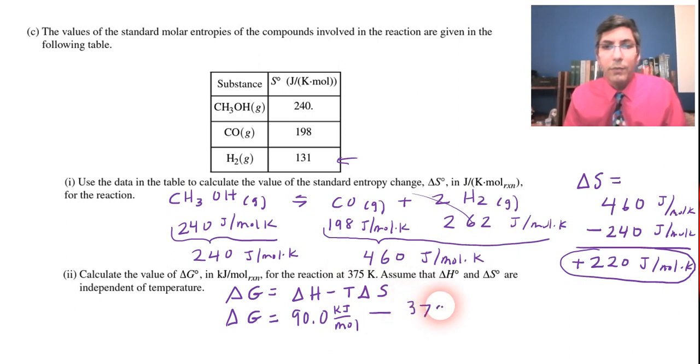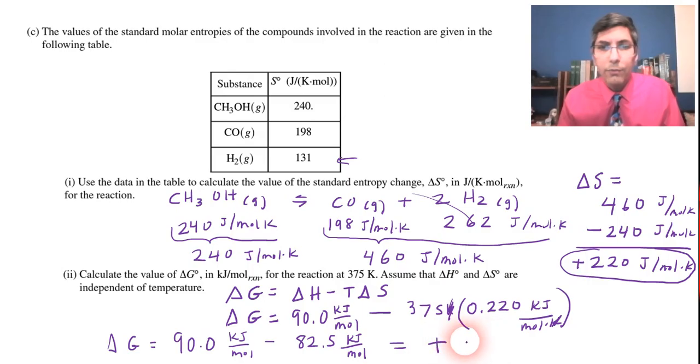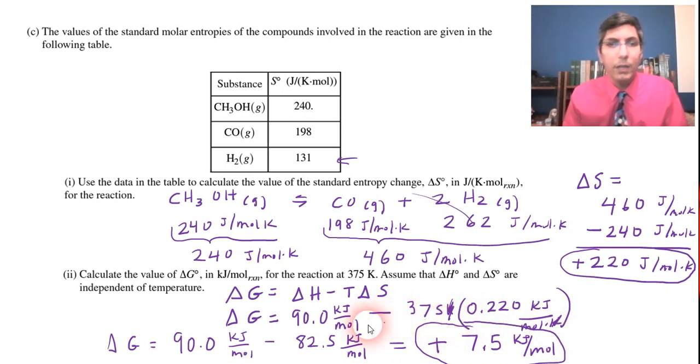So we're solving for delta G. And delta H was 90.0 kilojoules per mole. The temperature is 375 kelvins. And then the delta S, be careful with your units here, because we calculate this in joules per mole Kelvin. But the question says calculate it in kilojoules per mole. So you want to convert this to kilojoules by doing 0.220 kilojoules per mole Kelvin. And so when you do the math on this, we have that delta G equals our 90.0 kilojoules per mole minus, if I multiply those by each other, I think I get 82.5 kilojoules per mole. And so when I subtract, my final answer seems to be a positive 7.5 kilojoules per mole.